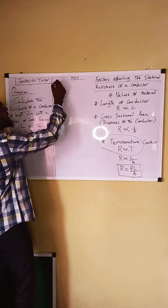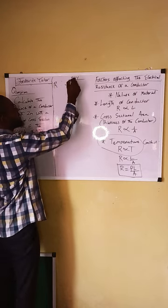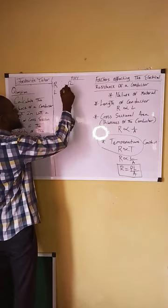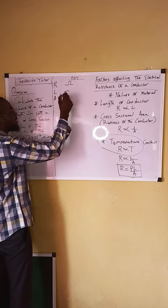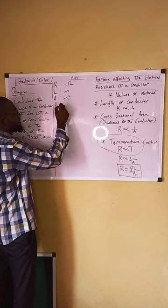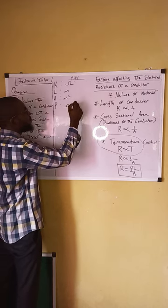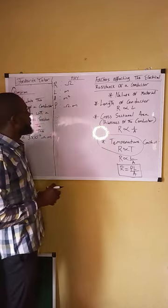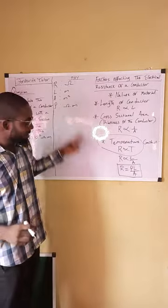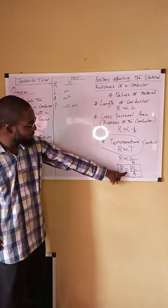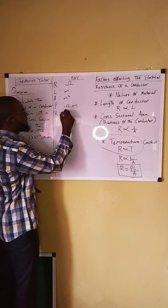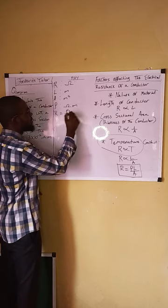The resistance is measured in ohms. Length is measured in meters. Area is measured in meters squared. And the resistivity is measured in ohm-meters. The unit for resistivity is ohm-meters — it is a derived unit derived from the equation R = ρL/A.